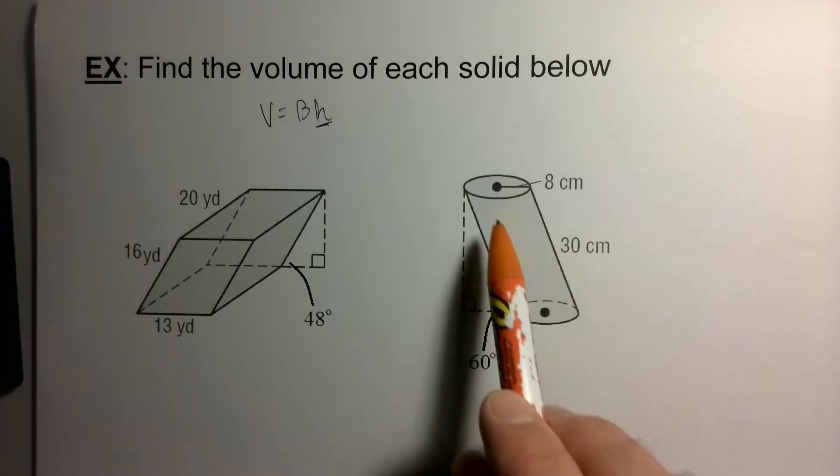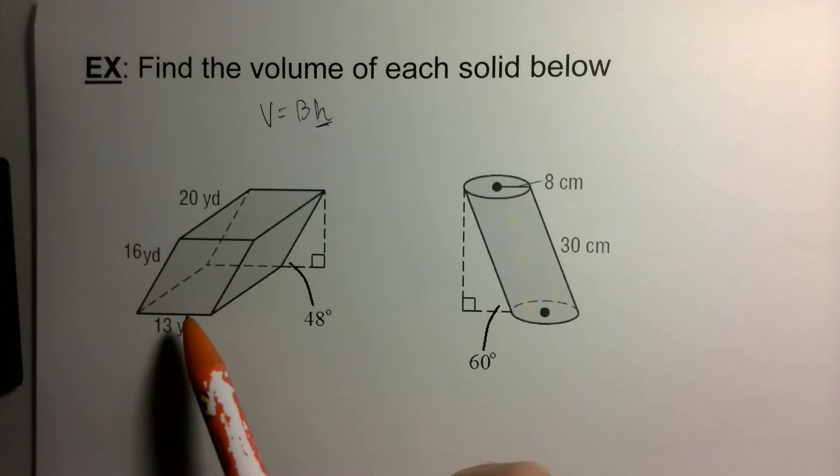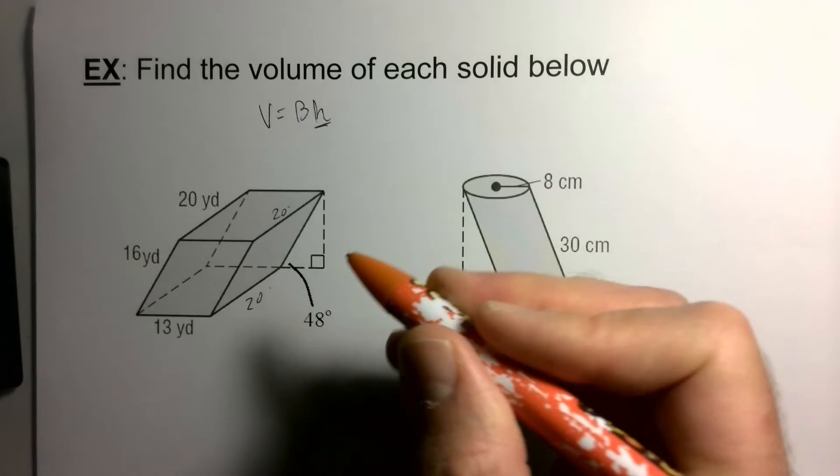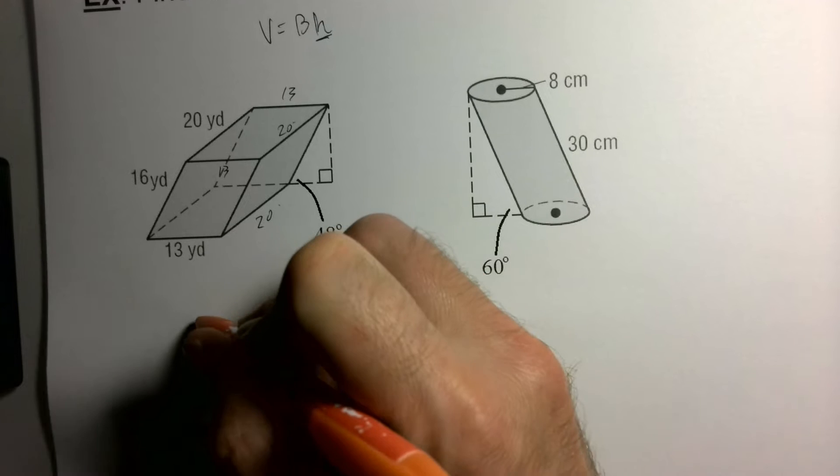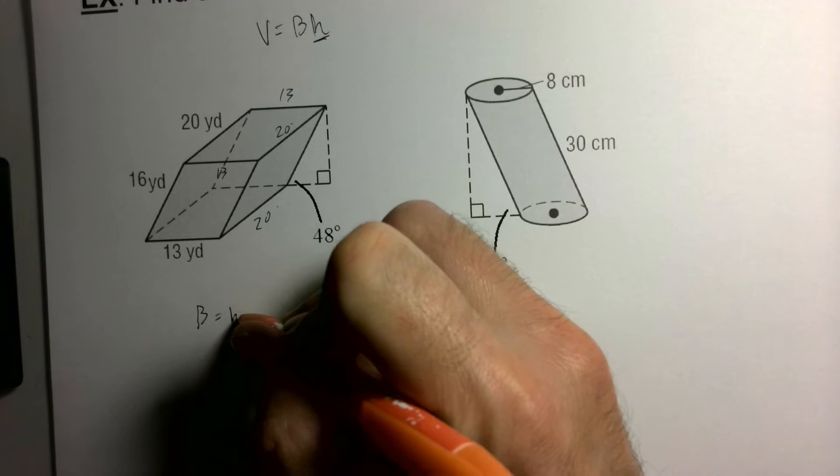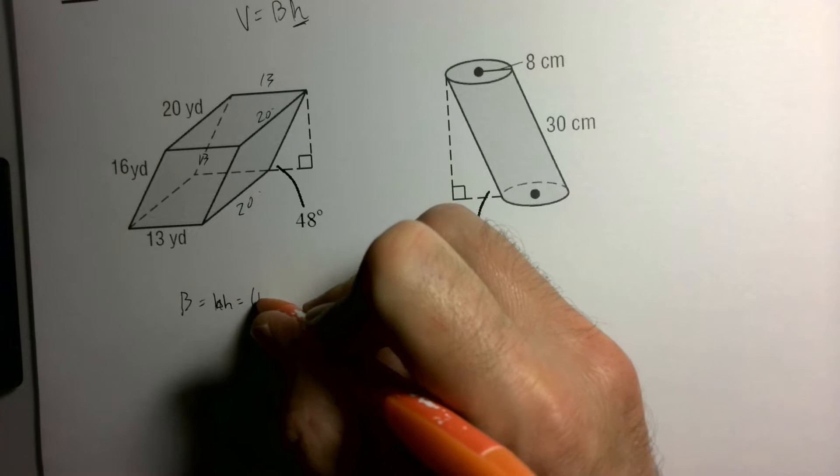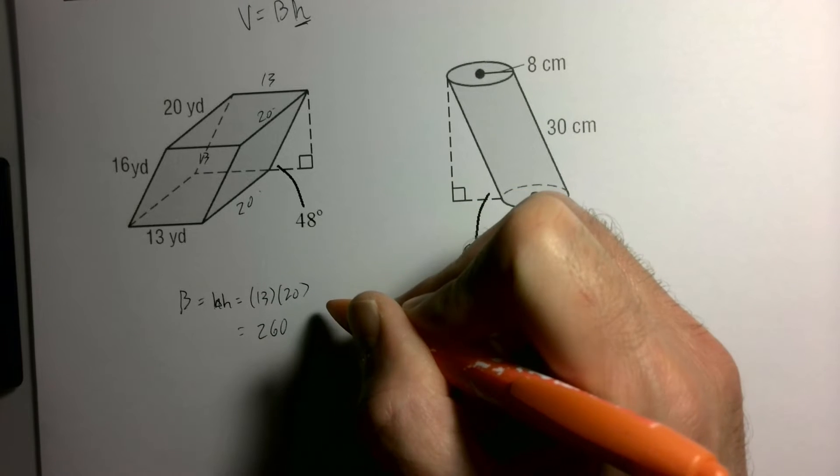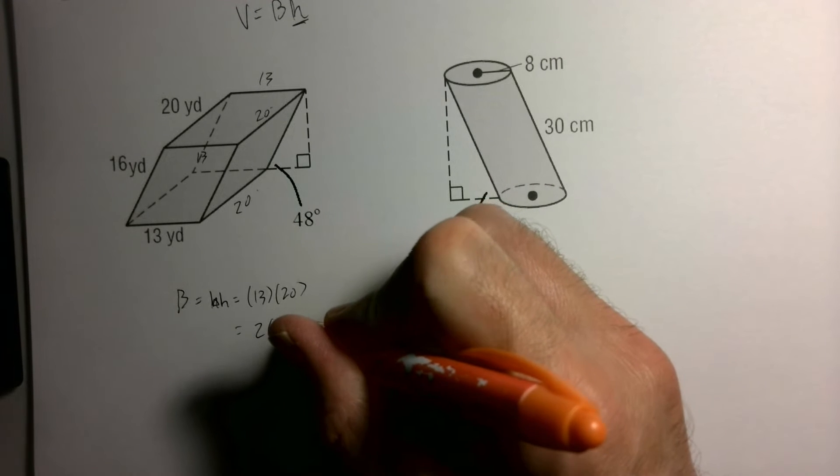Over here I have a cylinder because my bases are circles. I can find the area of my base. If this is rectangular, those opposite sides are 20, 20, 13, 13. So area of my base, no problem - that's just base times the height of my rectangle, so 13 times 20 should be 260 square yards.